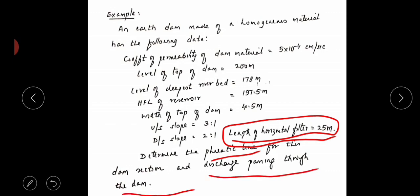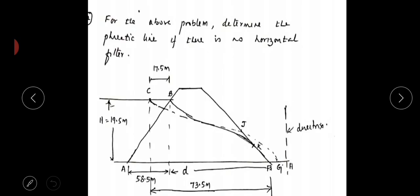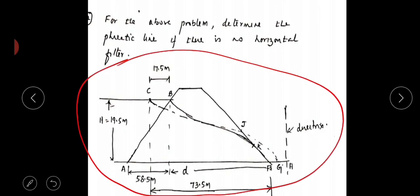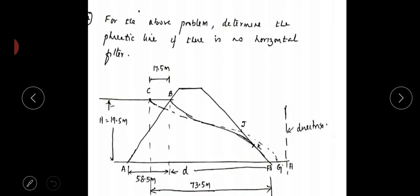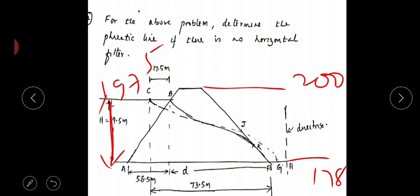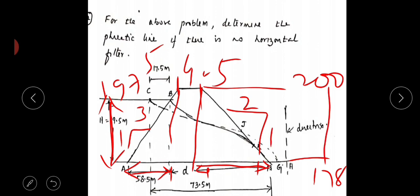This will be your diagram showing the profile of the dam. Using the slope 3:1 you'll get this distance. This point is 200 RL and down is 178, and this one is 197.5. Using this you'll get the height, and using slope 3:1 you'll get this distance, and this is 4.5.